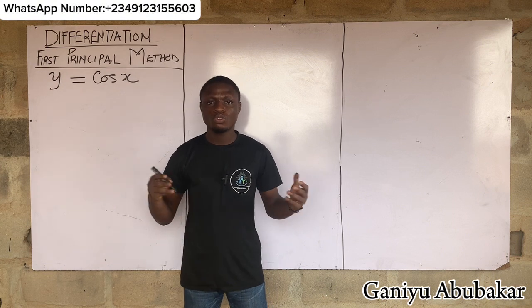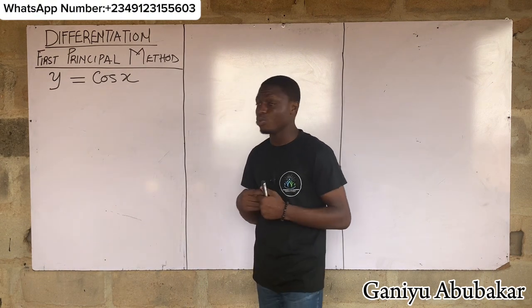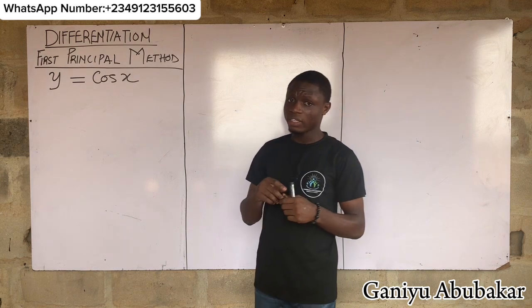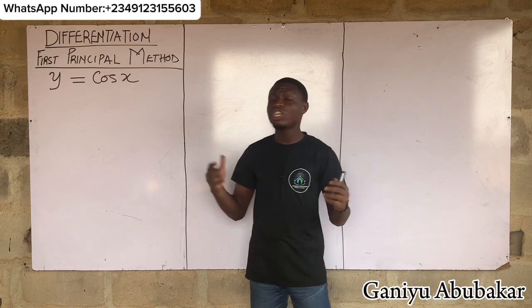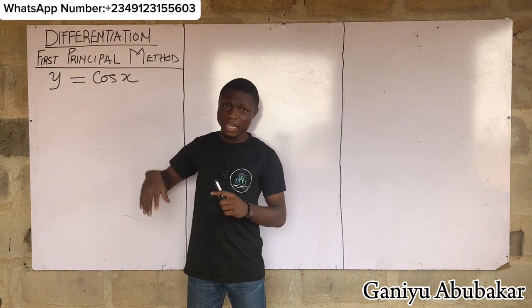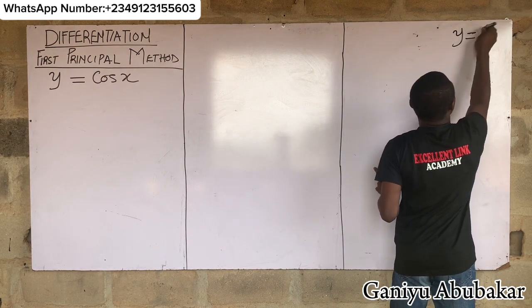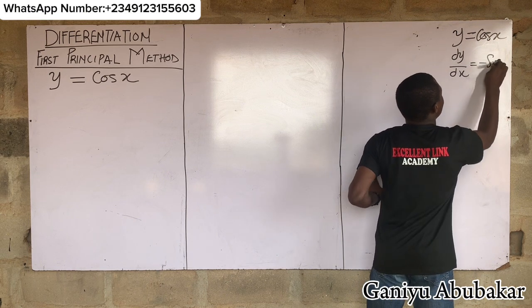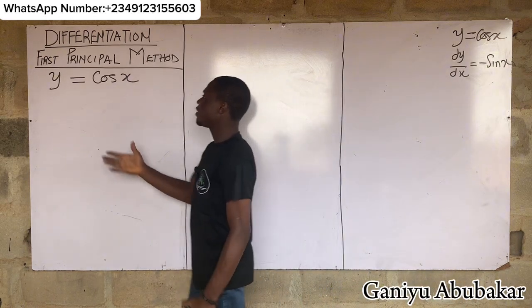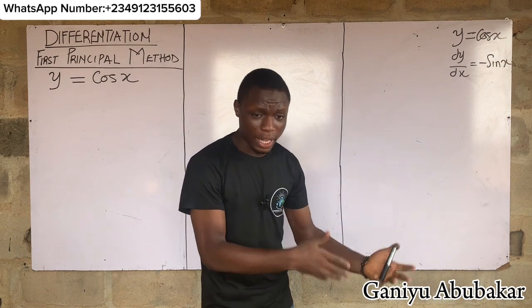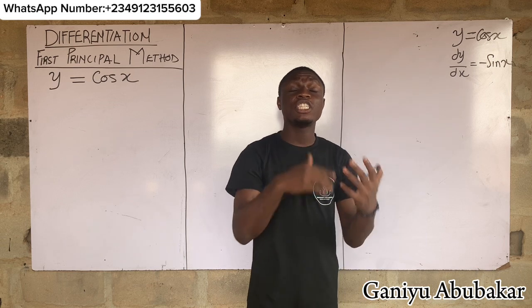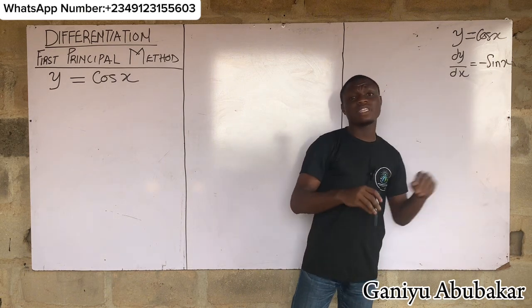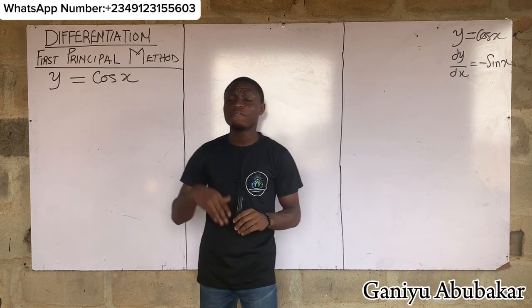Hi there and welcome to today's class. We'll look at how to prove that, given y equals cos x, the derivative dy/dx is equal to minus sin x. We are asked to use the first principle method to prove this. Let's do that and see if our answer is comparable with minus sin x.